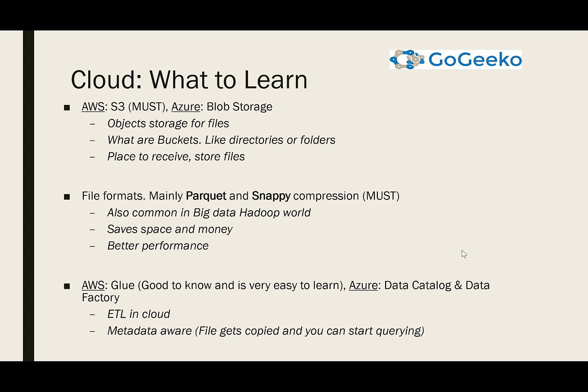Cloud is auto-scalable — you can keep scaling and adding space, but you'll be charged for it. So you need to figure out ways to compress files, save on space, and perform better. Parquet is the file format and Snappy is a compression technique — these are the most important ones to know. Another good product to know is AWS Glue, which is essentially ETL in the cloud. It's metadata-aware, meaning a file gets copied and you can start querying data in those files as soon as it lands in your S3 bucket.